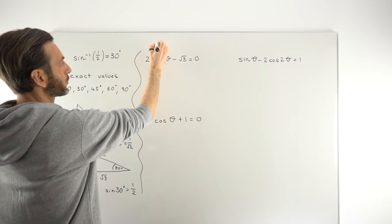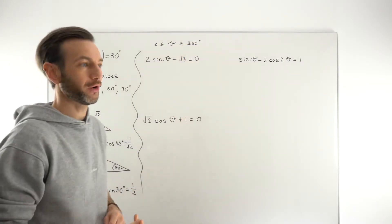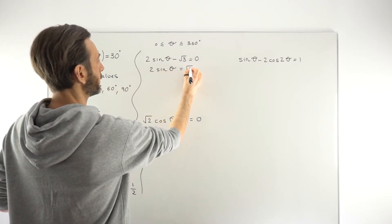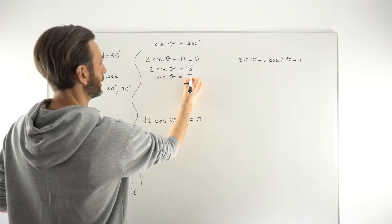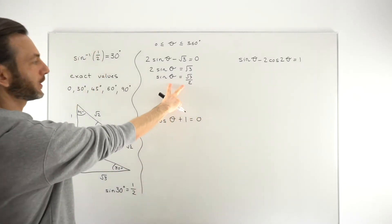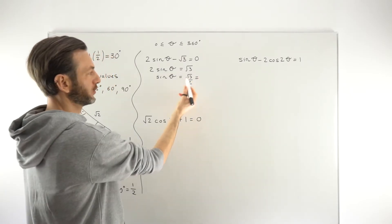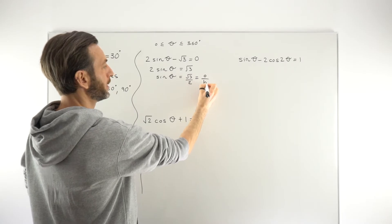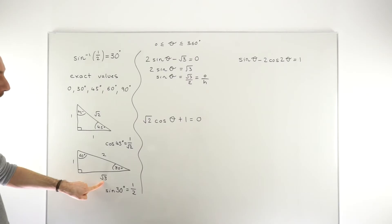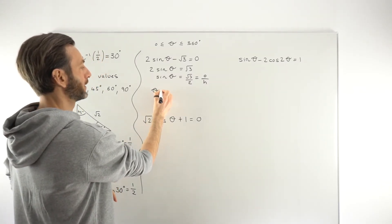Let's work some examples — some in degrees, some in radians. We'll start solving for theta between 0 and 360 degrees. First, rearrange the algebra: 2 sin θ = root 3, so sin θ = root 3 over 2. We're figuring out the angle that gives us root 3 over 2. Since sine is opposite over hypotenuse, we want root 3 opposite and 2 as the hypotenuse. Root 3 is opposite 60 degrees in the triangle, so θ = 60°.